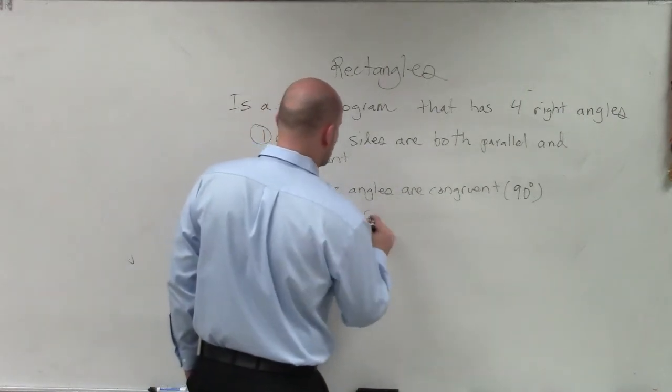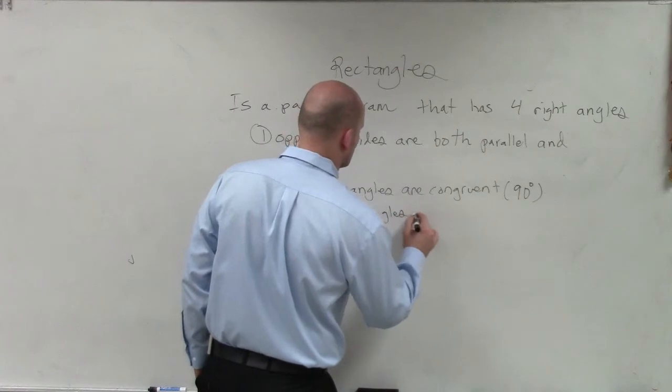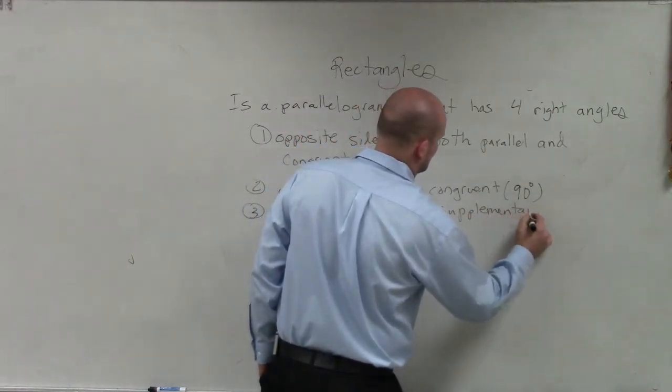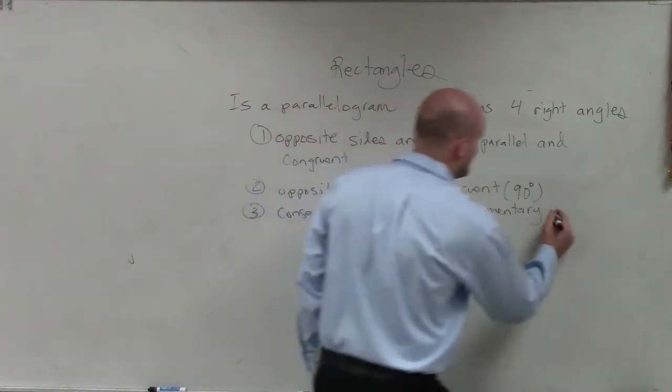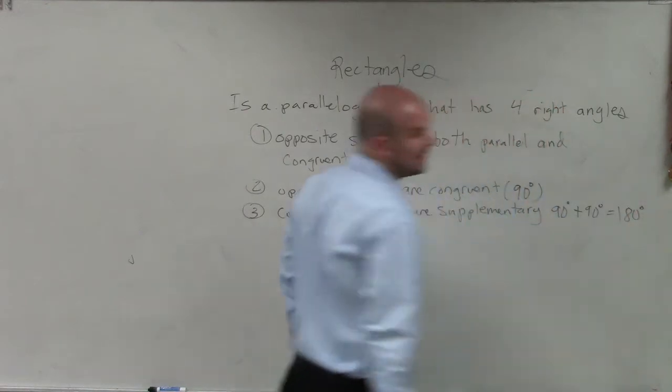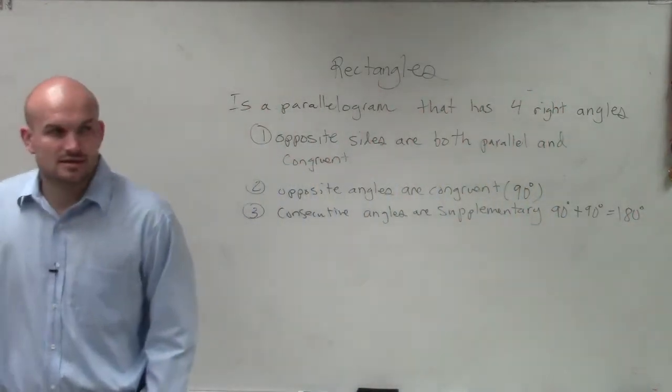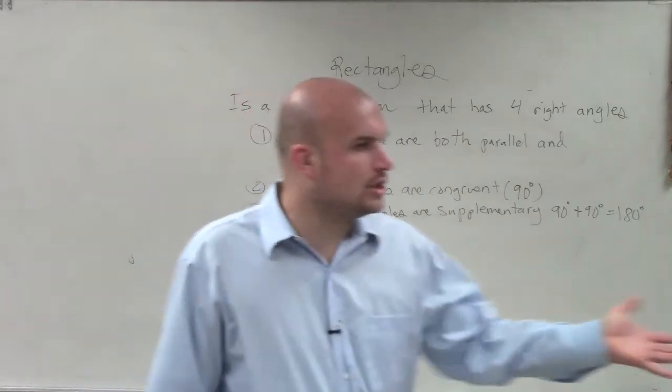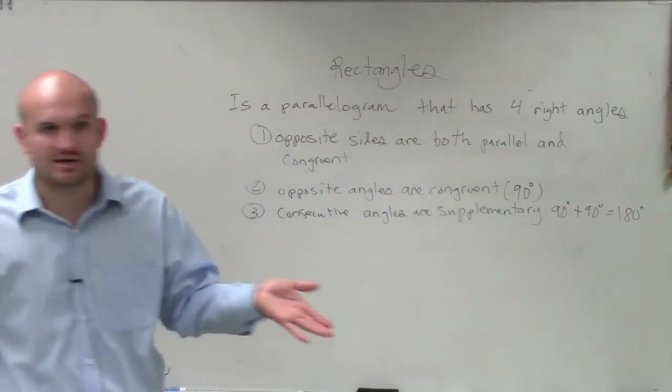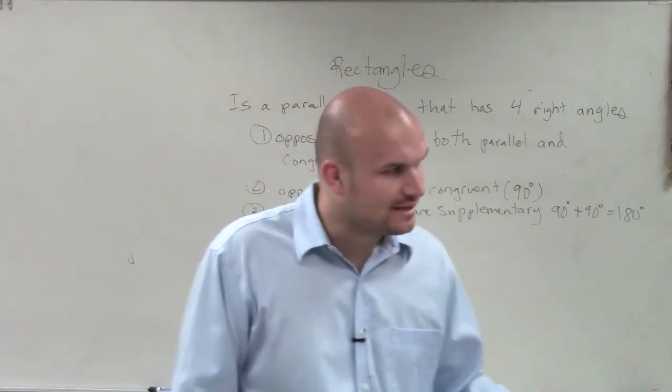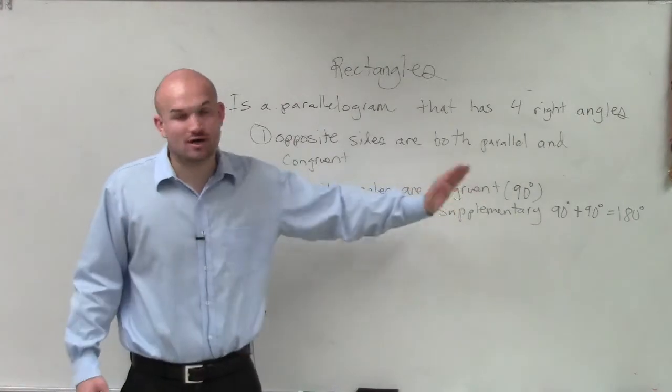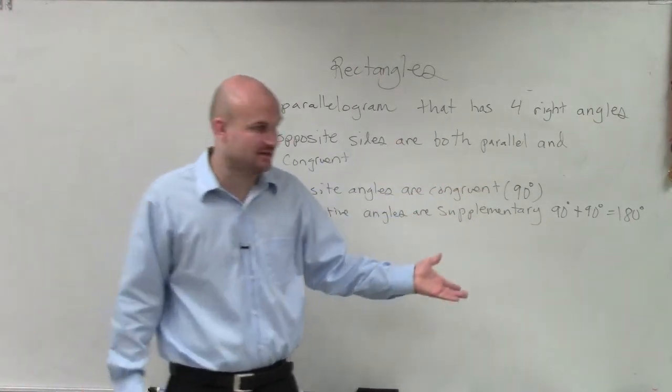And you could say consecutive angles are supplementary. And we know that, because you have 90 degrees plus 90 degrees, that equals 180 degrees. So really, you can say that any two angles that are right next to each other, which we call consecutive, those are going to be supplementary. They're going to add up to 180. And remember, all of the angles, even the opposite angles, are congruent. They're both equal to 90 degrees. All the angles are equal to 90 degrees.